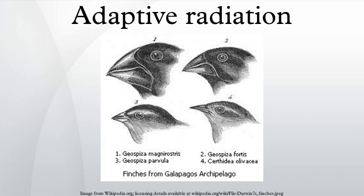In evolutionary biology, adaptive radiation is a process in which organisms diversify rapidly into a multitude of new forms, particularly when a change in the environment makes new resources available, creates new challenges, or opens new environmental niches. Starting with a recent single ancestor, this process results in the speciation and phenotypic adaptation of an array of species exhibiting different morphological and physiological traits with which they can exploit a range of divergent environments.